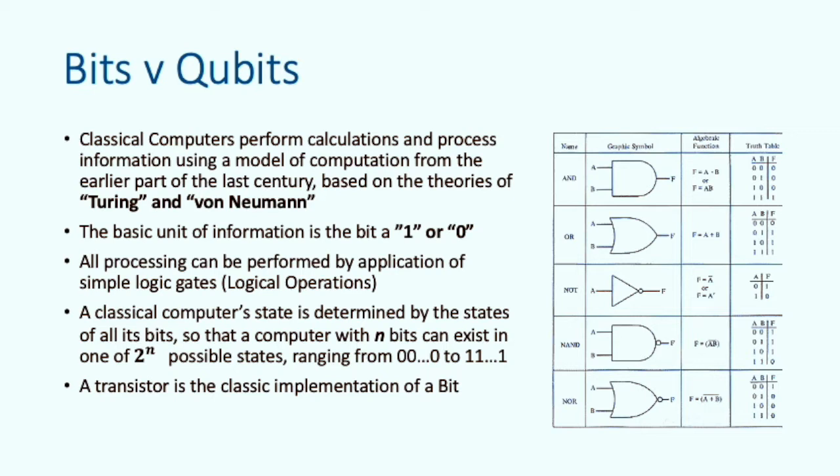In our classical computer, the basic unit of information is a bit in the state 1 or 0. If we want to calculate with our 1s and 0s, we apply logic gates. See the table on the right for the common boolean logic we can apply to our bits.